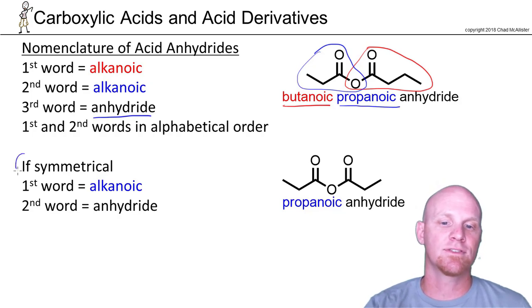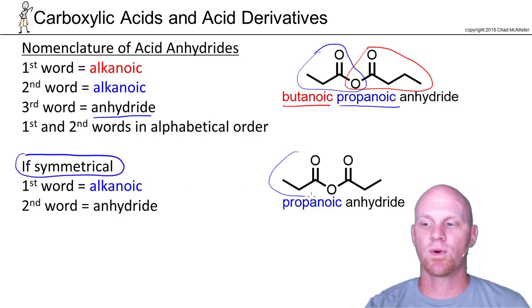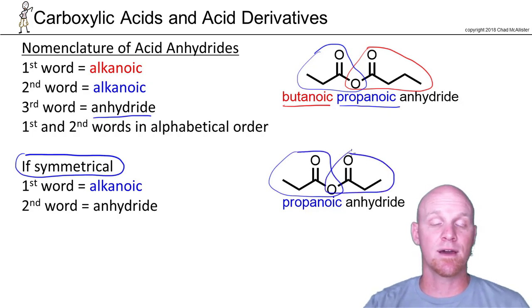Now on the other hand, if it's symmetrical, meaning that both sides of your anhydride came from identical carboxylic acid molecules—in this case they both came from propanoic acid—then rather than being redundant we just simply say propanoic anhydride, and we shorten it to two words instead of three.